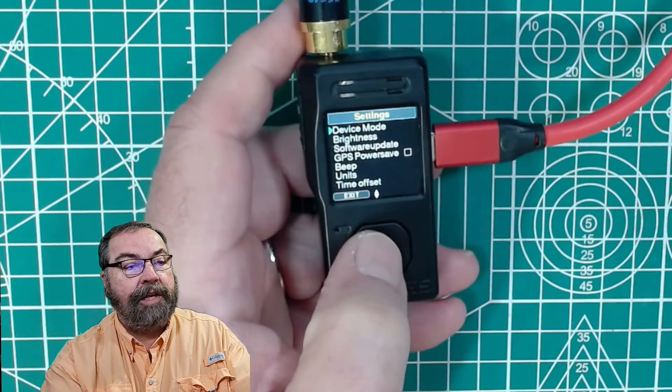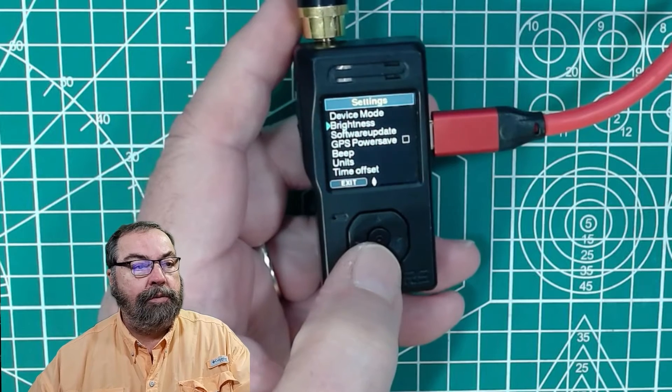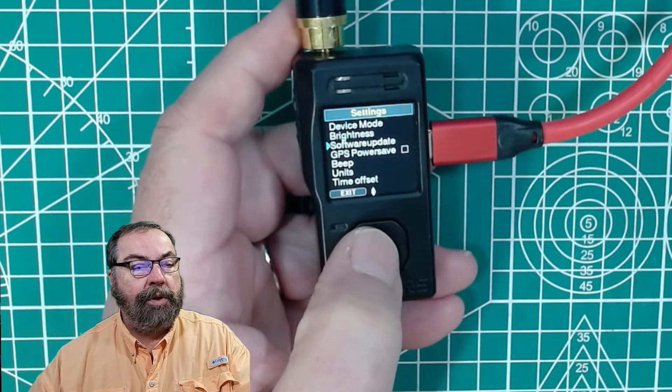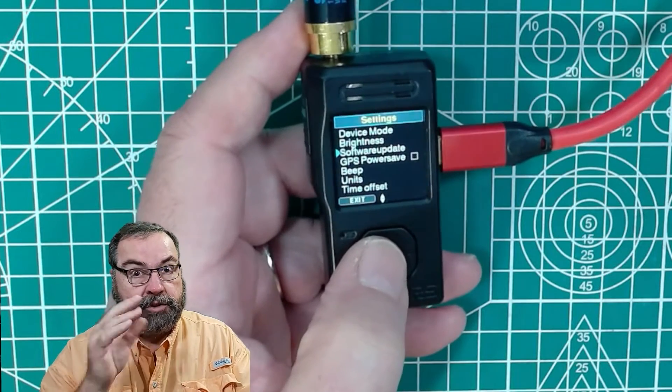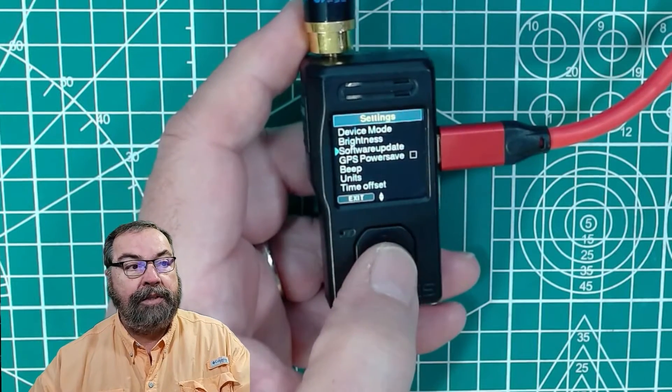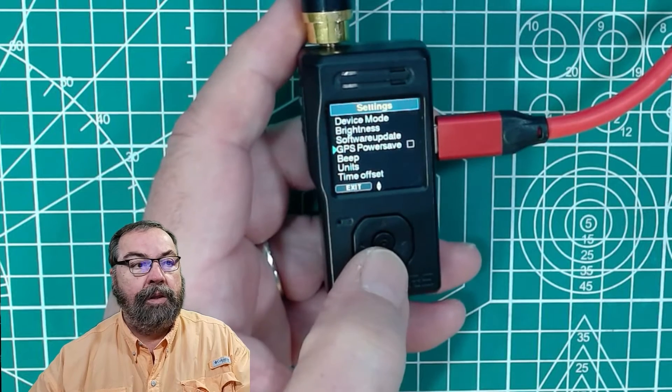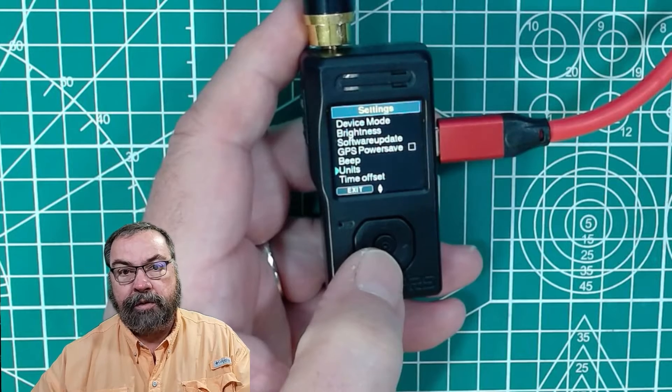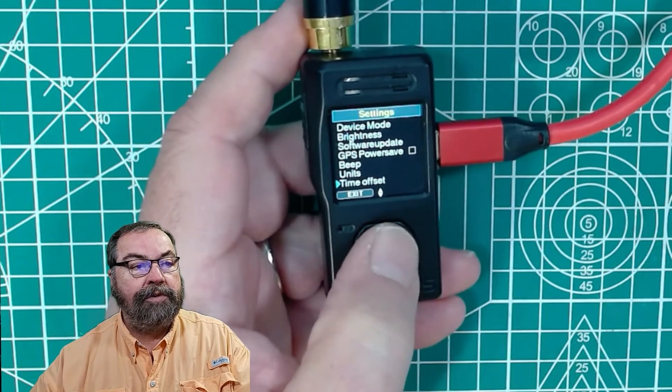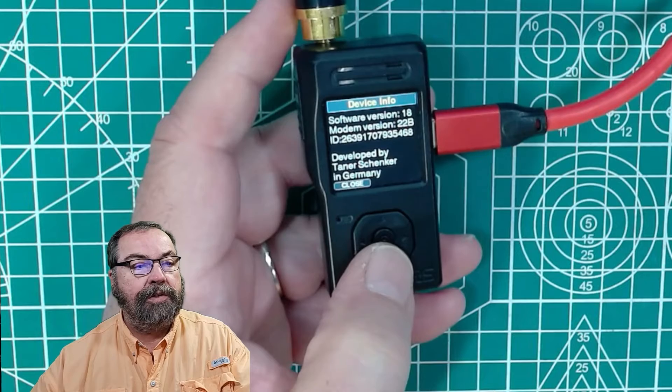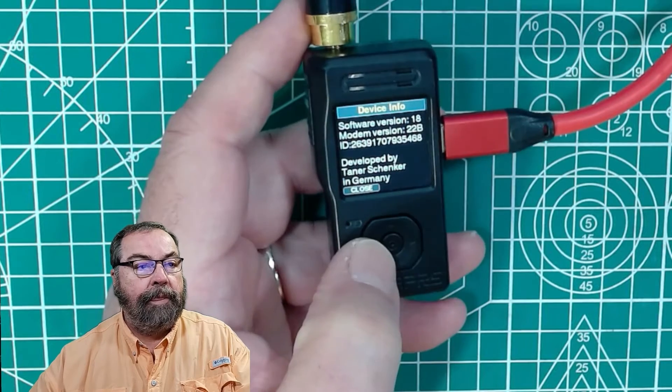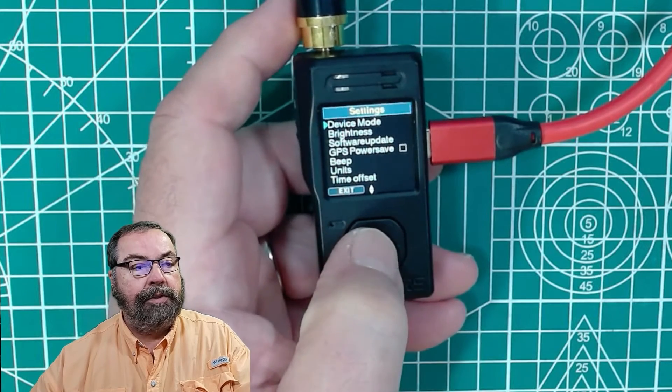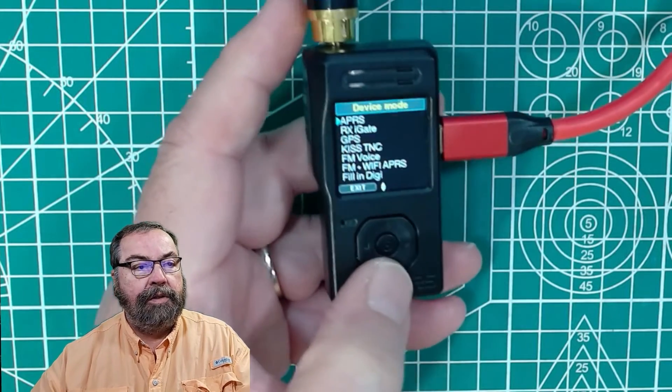So if we go into the settings menu, we have stuff we can do with the device itself, the screen brightness. We can check for a software update. And if you're in Wi-Fi mode, it will check and see if there's a firmware update, download it and install it. We can turn on GPS power saving, key beeps, what units we want, metric or imperial, our current time offset. And then the device info, which tells us the firmware, hardware versions. That's those basic functions.